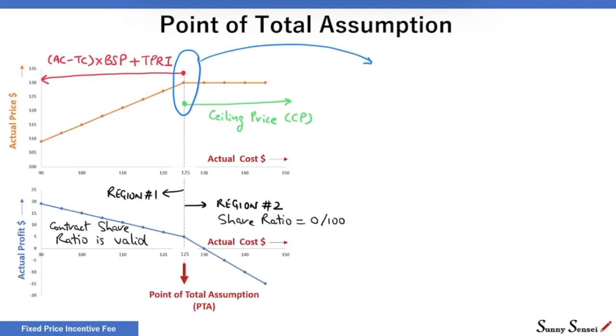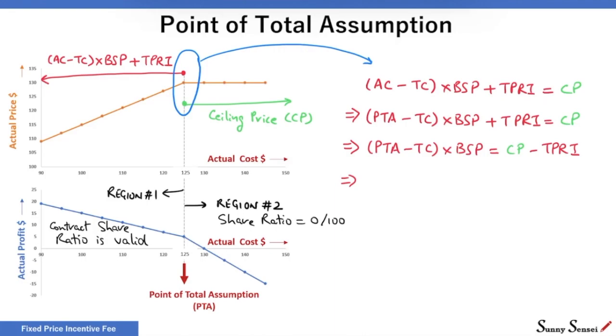Therefore, this equation is valid only when actual cost equals PTA. Hence, replacing actual cost with PTA. Let's take target price to the right hand side of the equation, as ceiling price minus target price divided by buyer share of risk in percent plus the target cost.